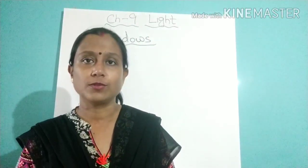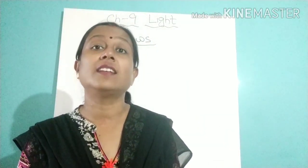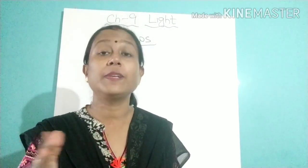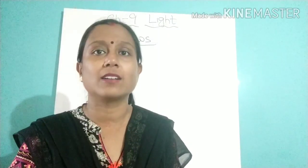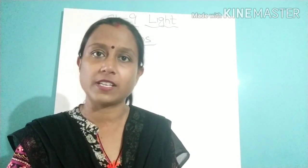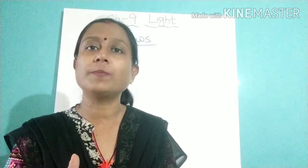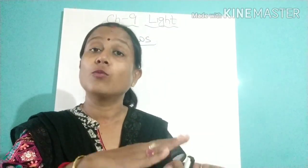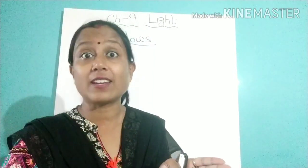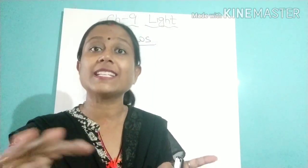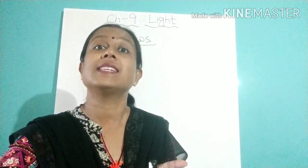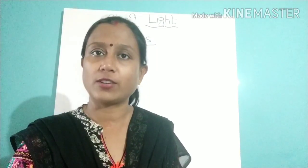Shadow — it is a dark region which is formed behind, that is, at the back of an opaque object. When an opaque object is placed in front of a source of light, as light cannot pass through that object, a dark space is formed at the back of the object. That dark space is known as shadow.